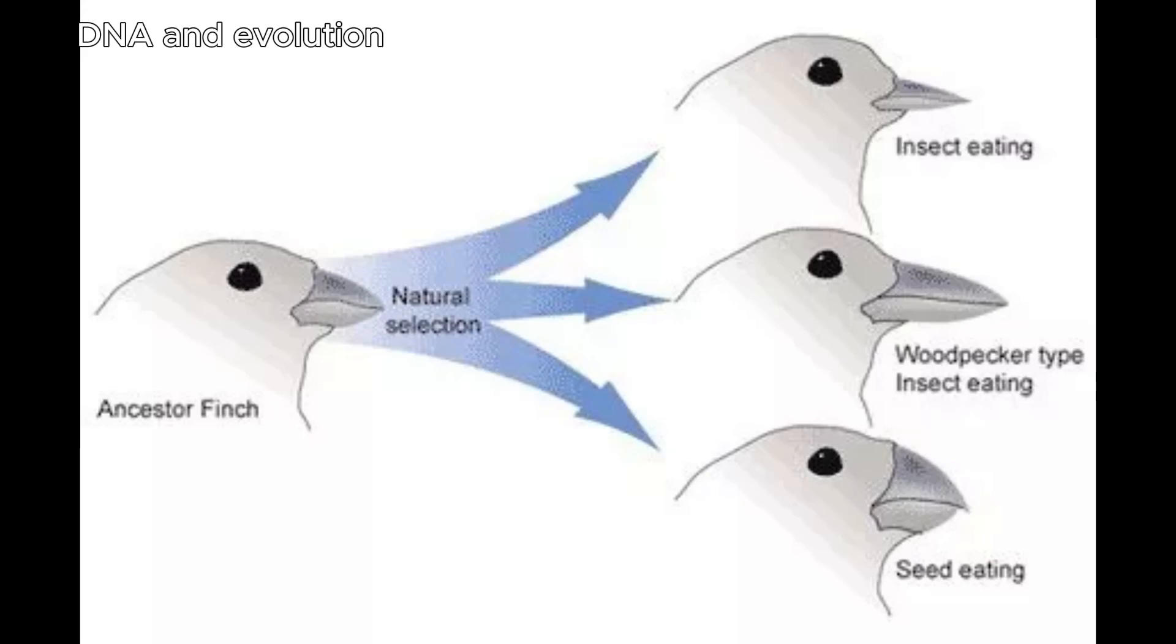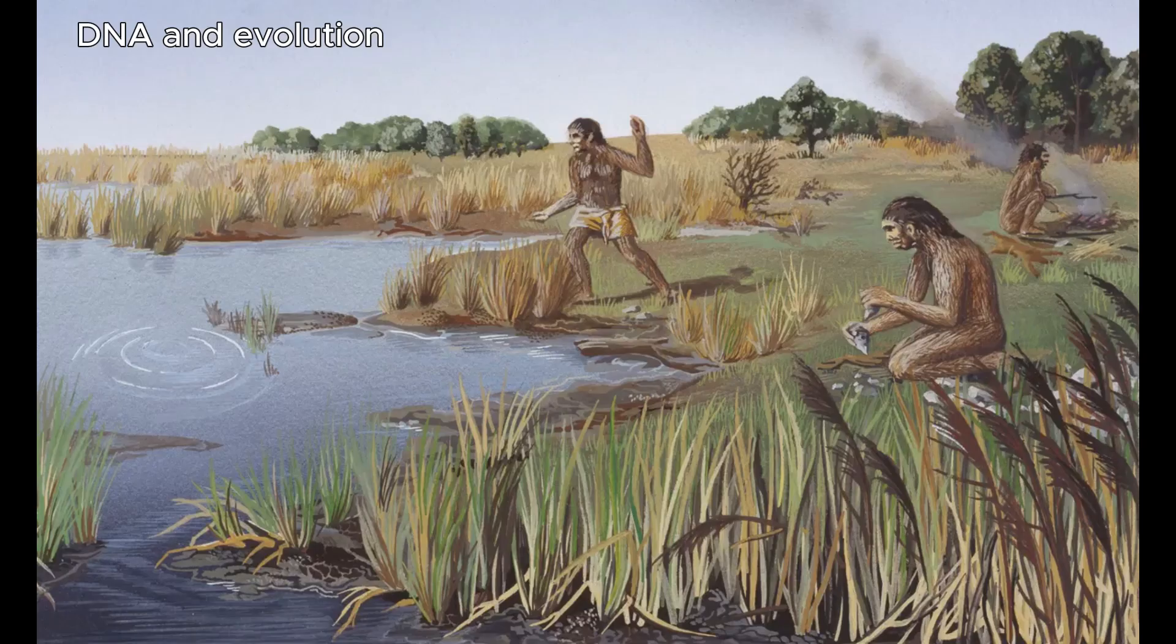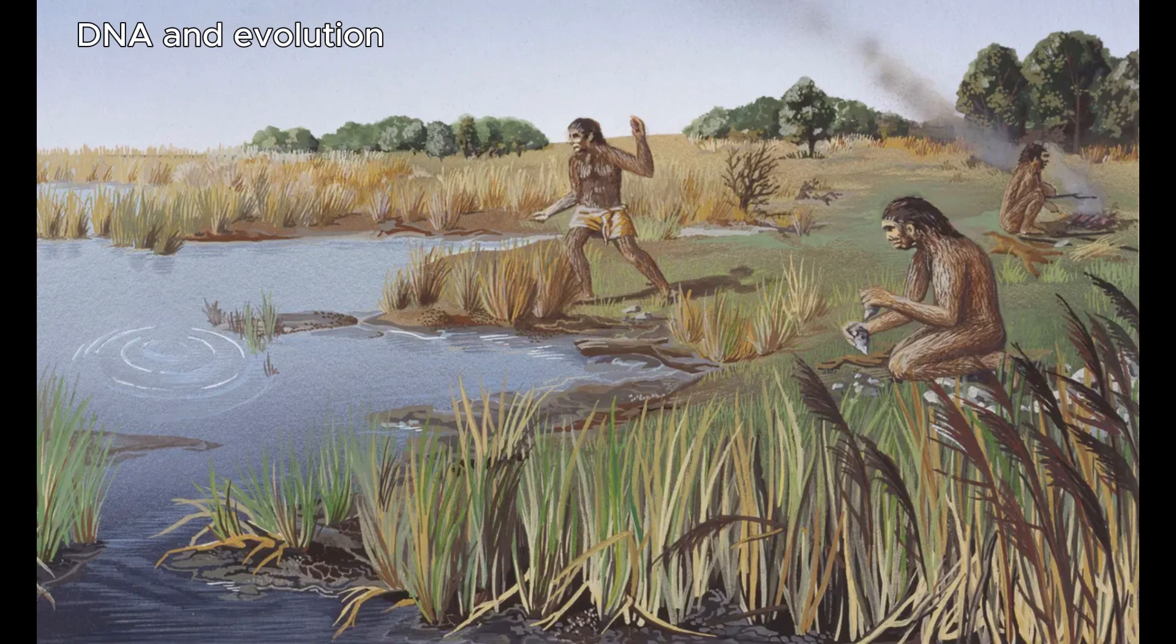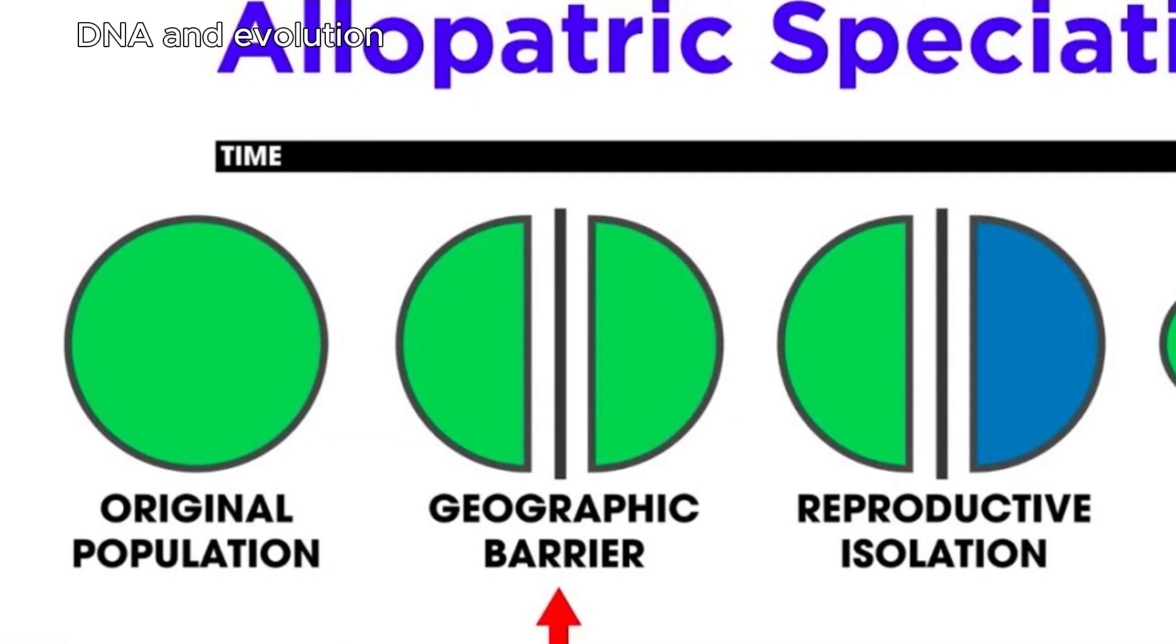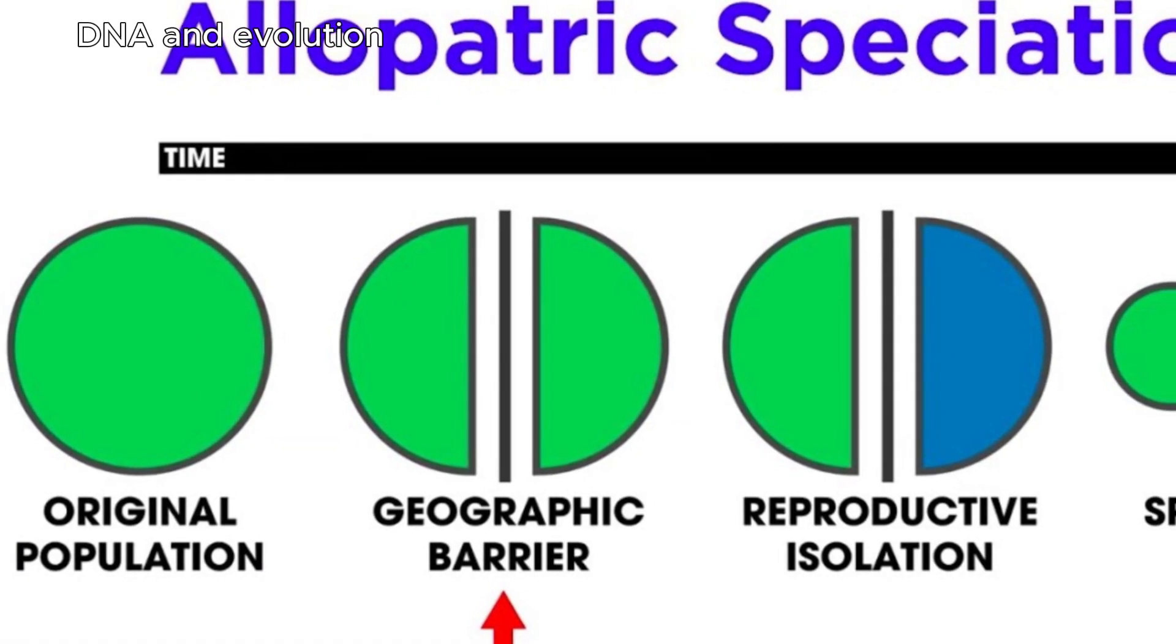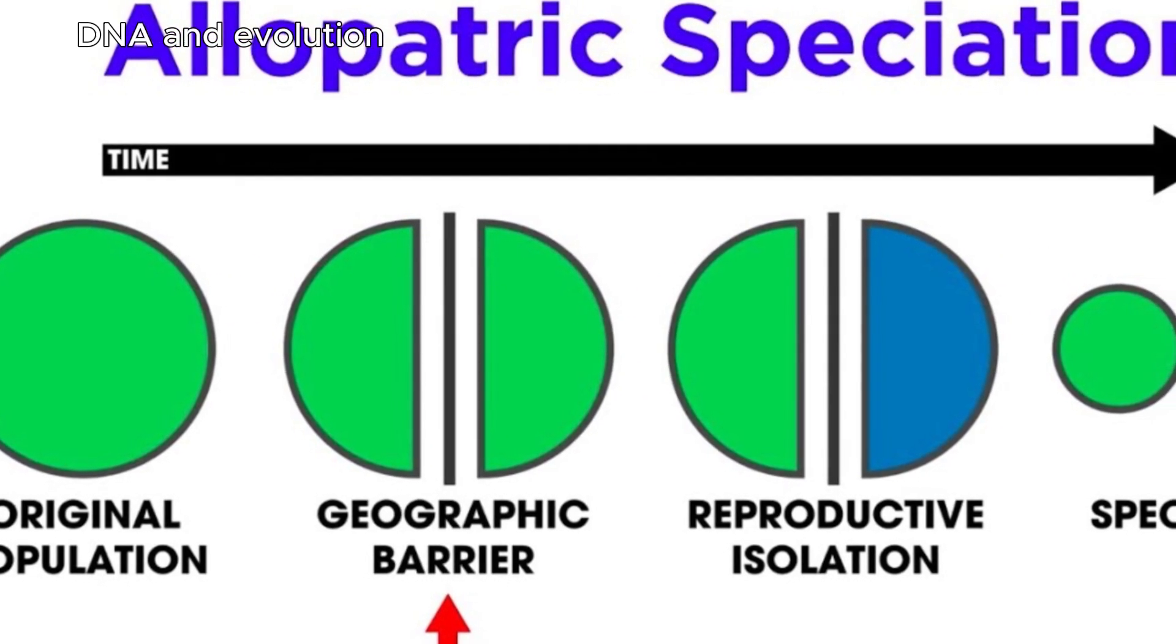So for example, if you take an original population of people within the same species, aka their DNA is close enough to reproduce with each other, and you split up this population of people in two such that they each go their own different ways.